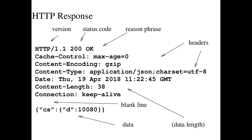A response includes the version, a status code — 200 means OK, 404 means not found — and response headers such as Content-Encoding, Content-Type, and Content-Length. After the headers and a blank line comes the actual data — in this example, a JSON object storing some fields.